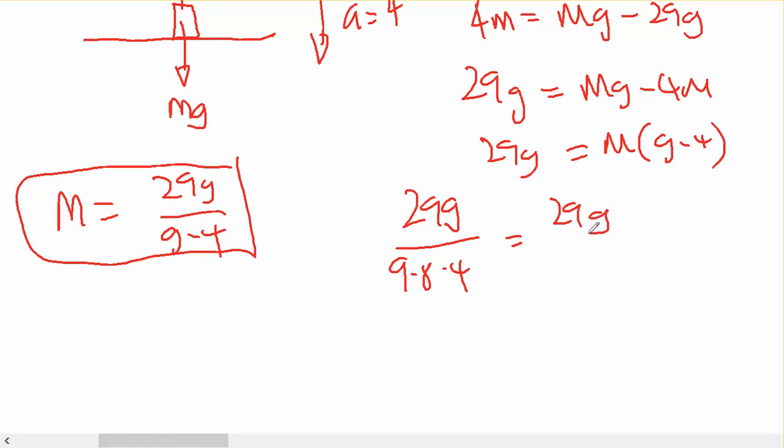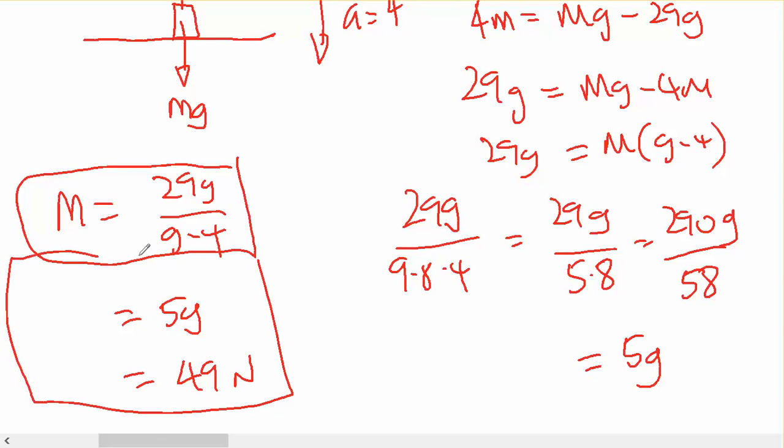Which is 290 divided by 5.8, approximately 290 divided by 58. And 58 goes into 290 five times. I'll also accept 5 G, or 49 newtons. Either of those answers.